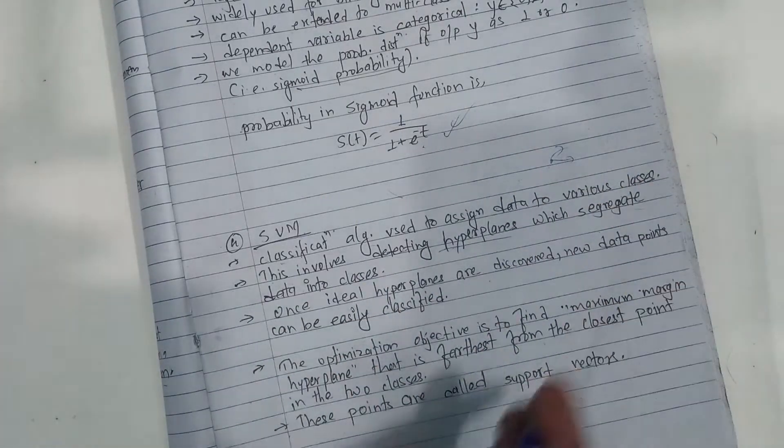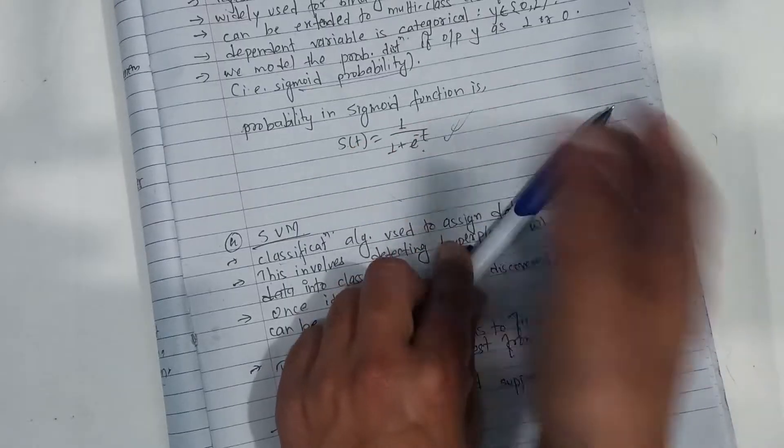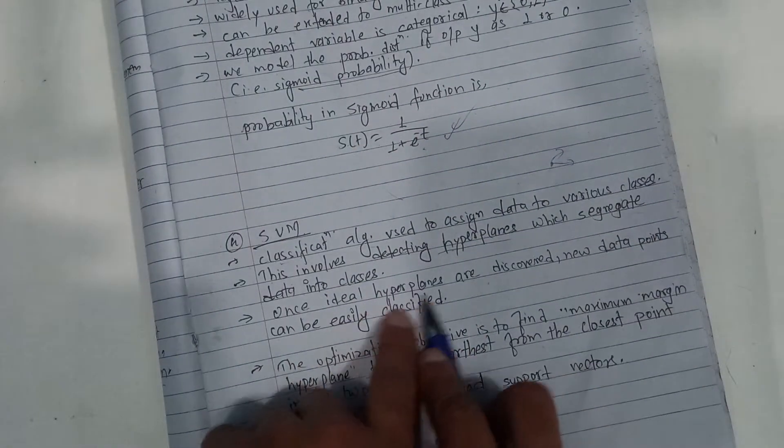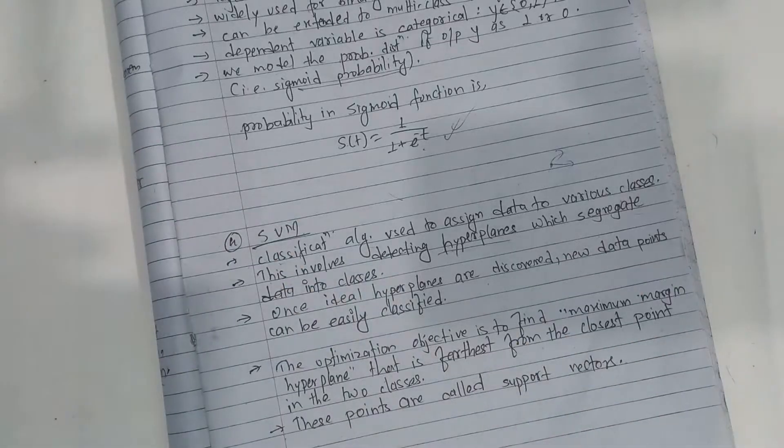If hyperplanes are detected, the data can segregate. Once ideal hyperplanes are discovered, new data points can easily be classified.